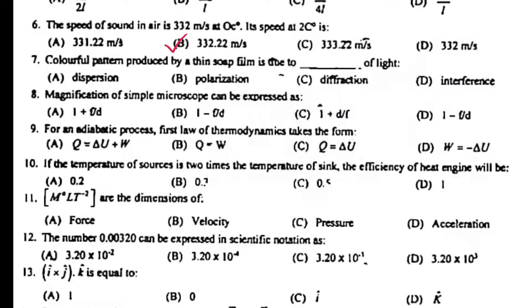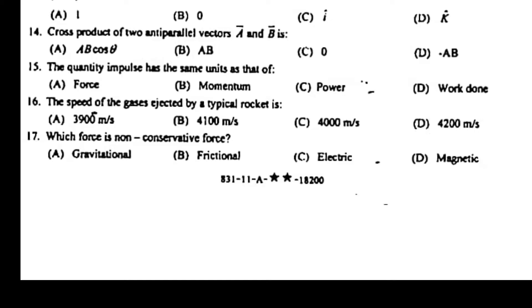If the temperature of source is two times the temperature of sink, the efficiency of heat engine will be 0.5. M¹L¹T⁻² are dimensions of force. The number 0.0030 can be expressed in scientific notation as 3.02 × 10⁻³. i cross j dot k is equal to one. Cross product of two antiparallel vectors A and B is zero. The quantity impulse has the same unit as that of momentum. The speed of gases ejected by a typical rocket is 4100 meter per second. Which force is non-conservative force? Frictional force.